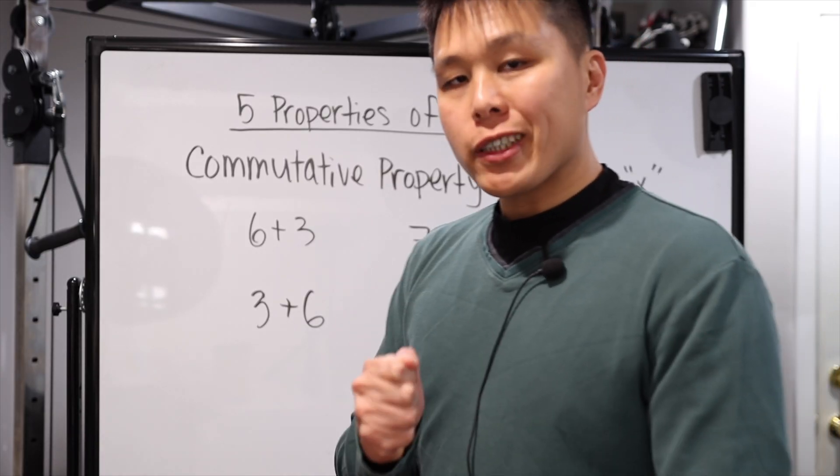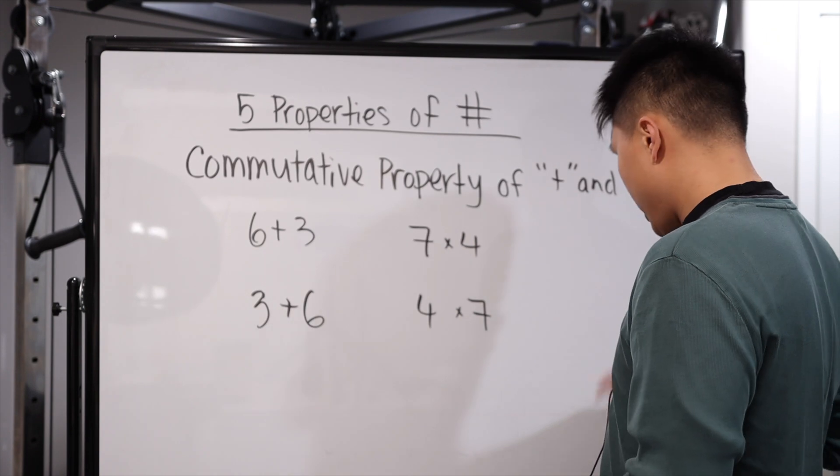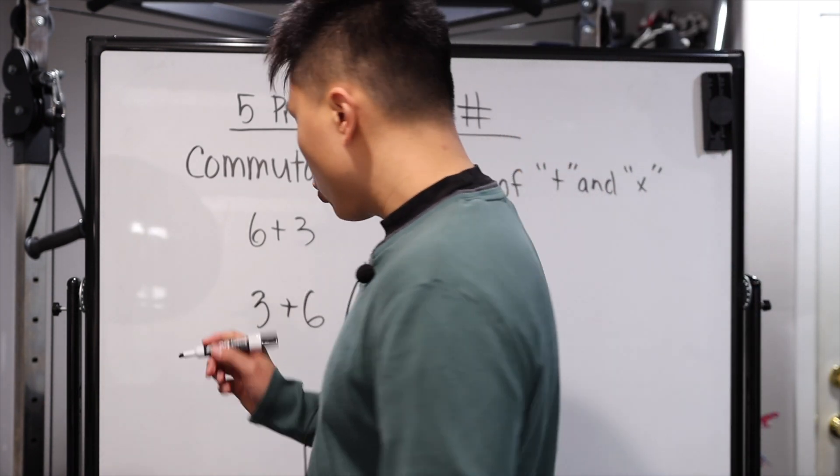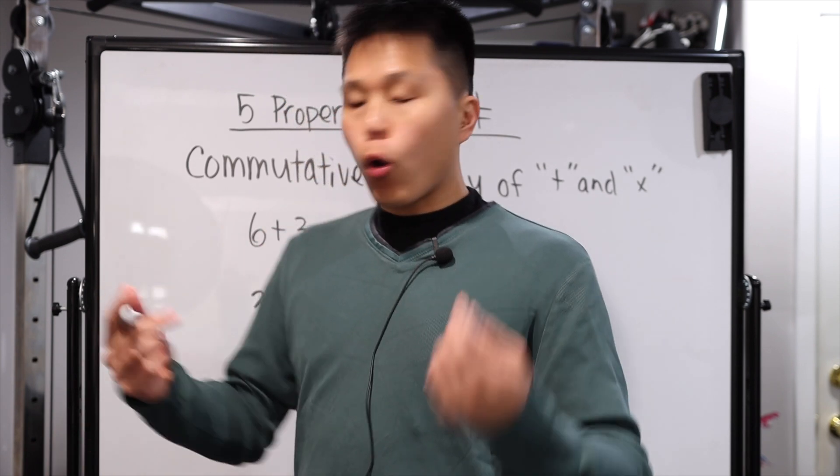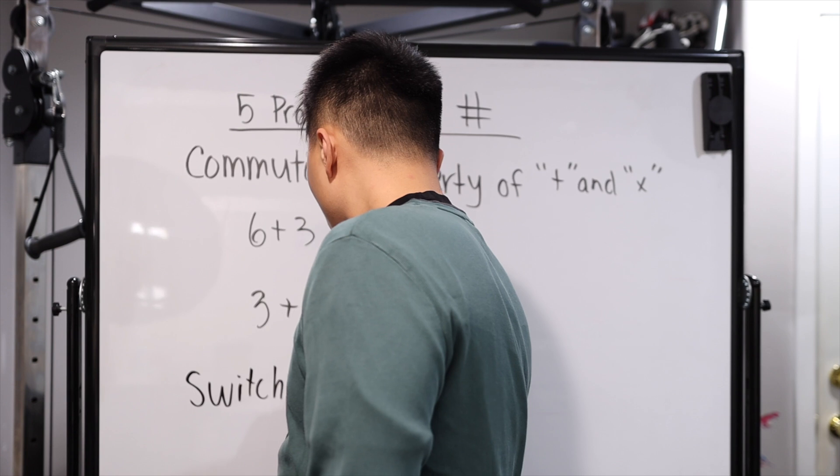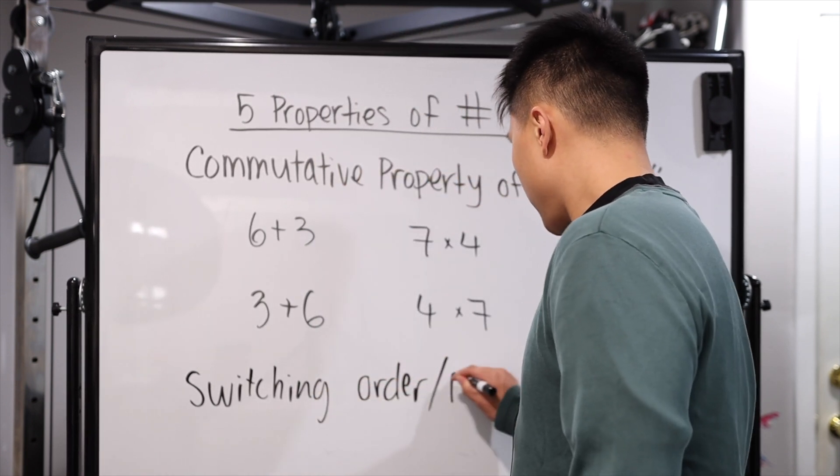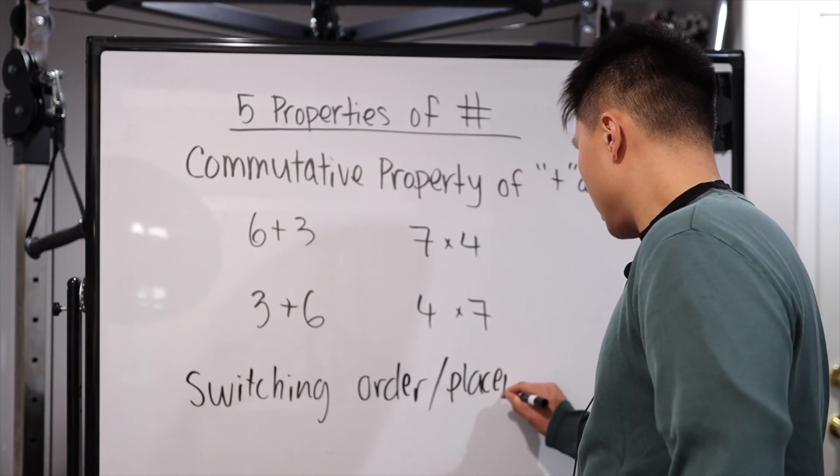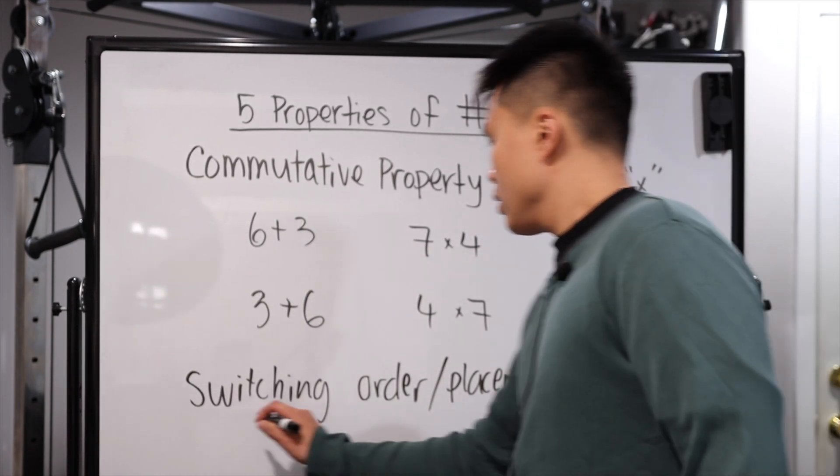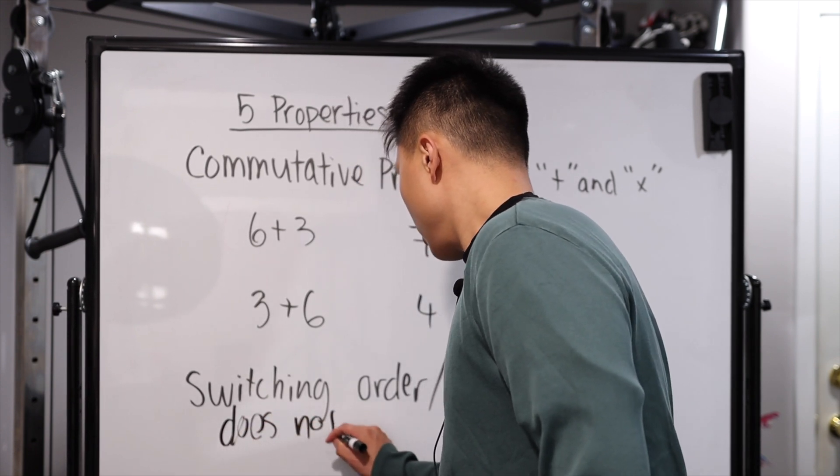The next two, basically properties three and four, is the commutative property of addition and multiplication. So commutative property basically means you can switch the placement, the order of the number. So let's just say switching order of number does not matter.